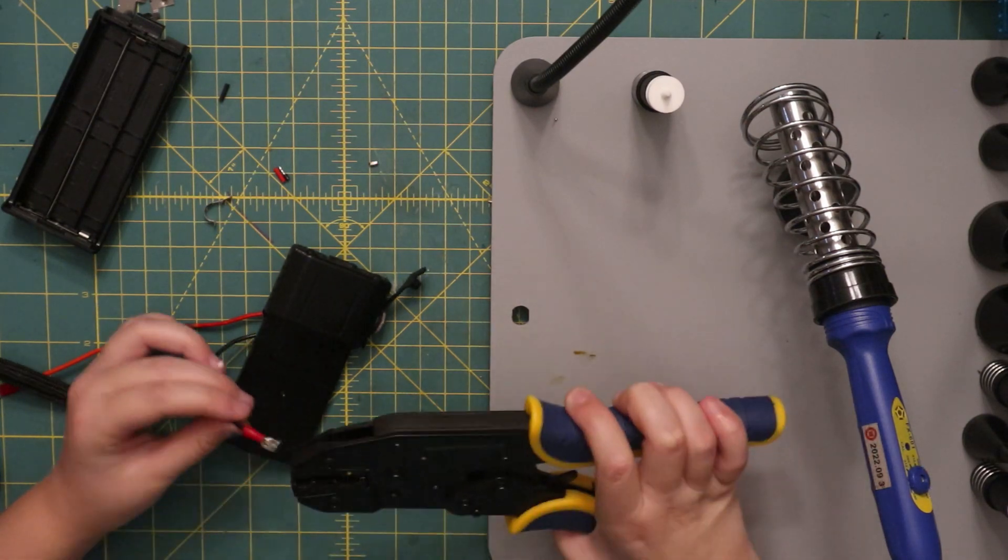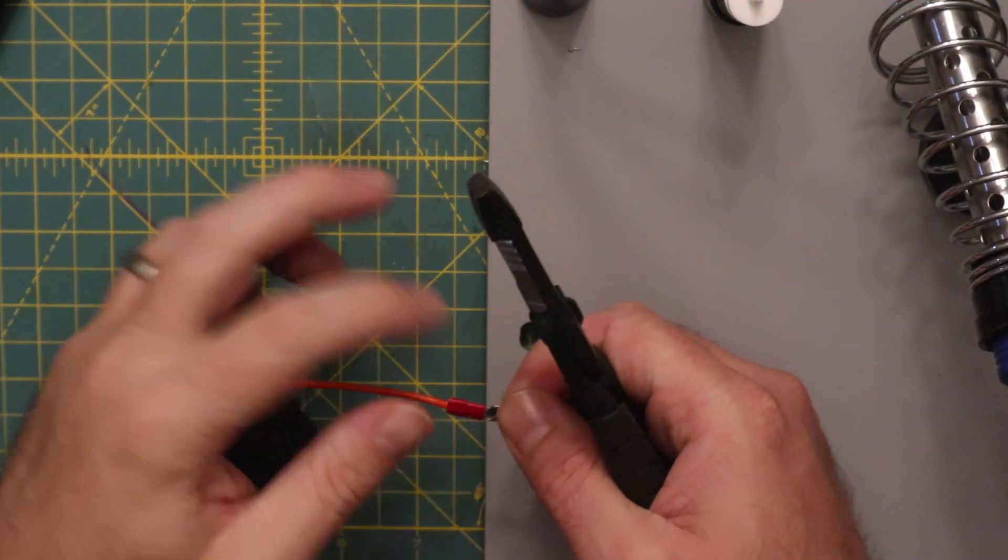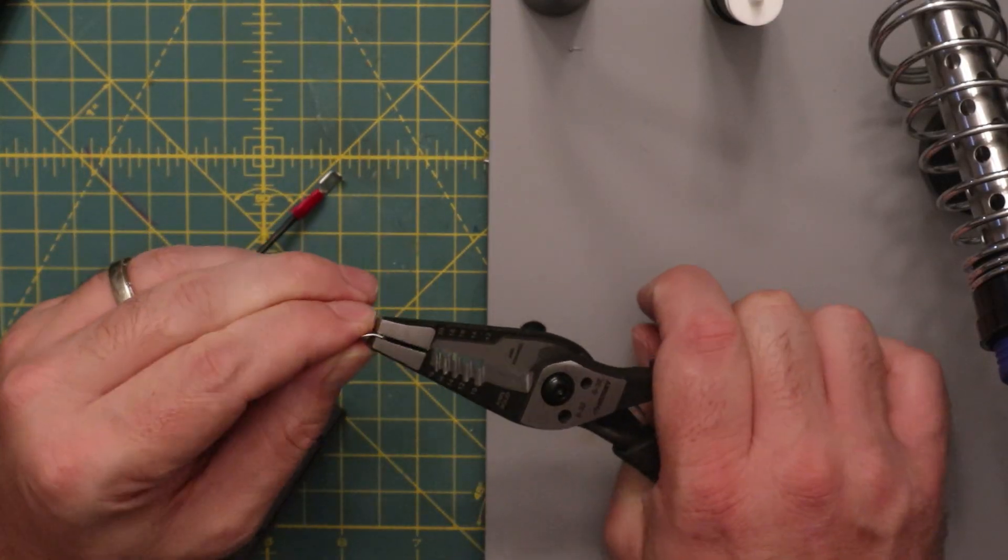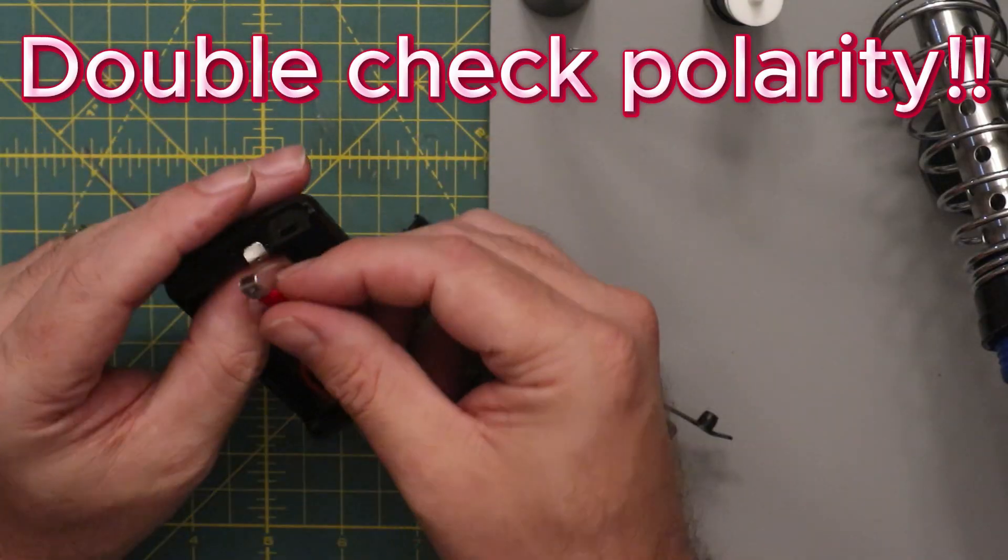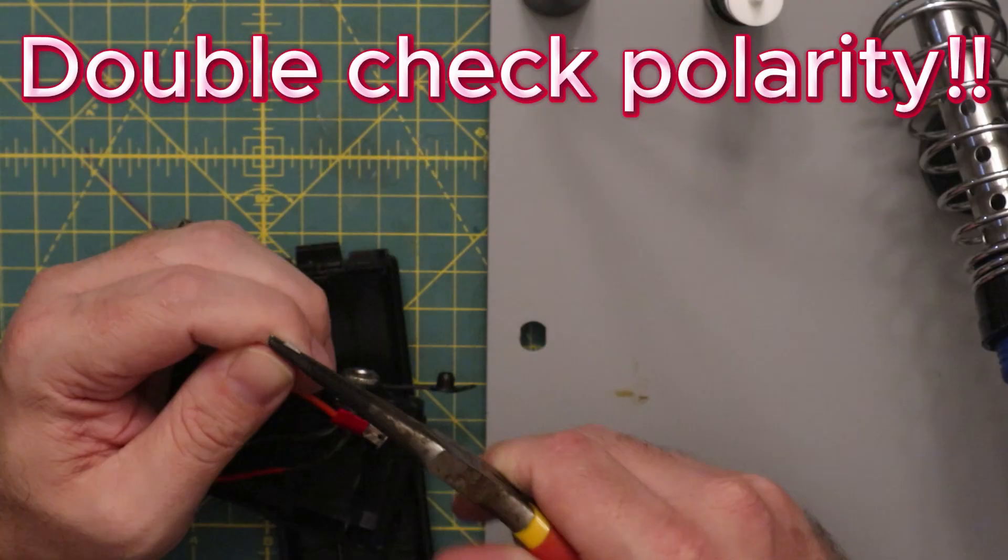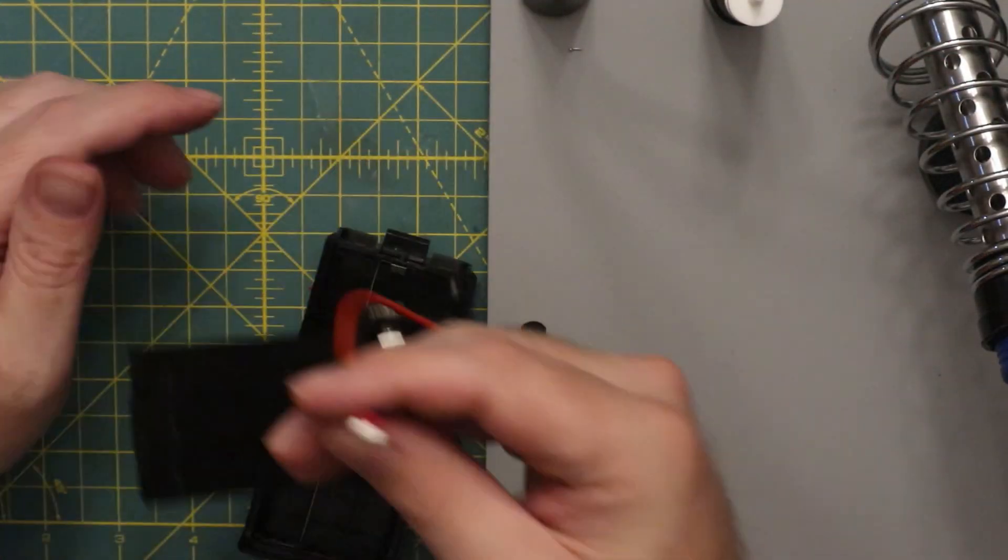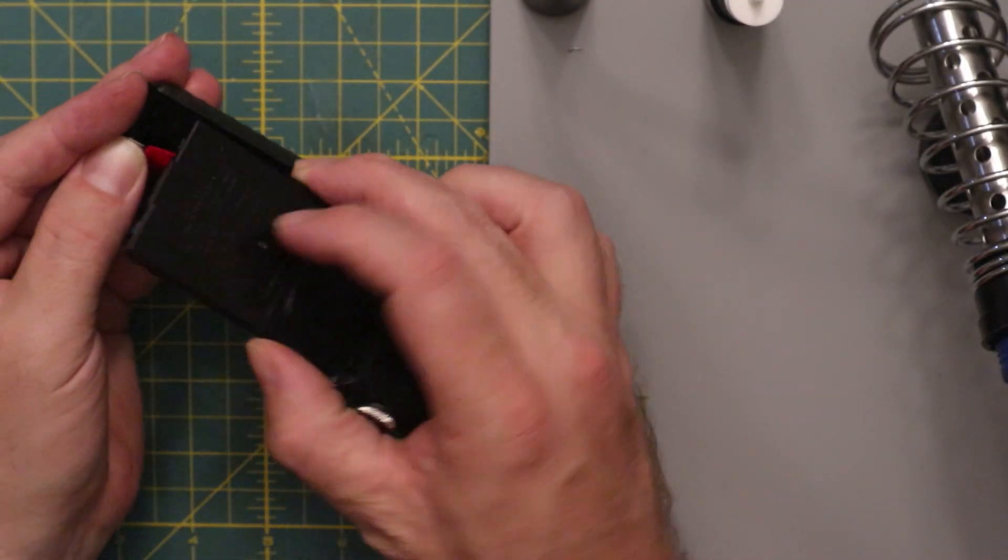We'll do that for the positive and then the negative lead here. Once we have those nice and solid we're going to go back in with the pliers and apply a 90 degree bend that's going to simulate the terminals that were originally on the battery pack. It did take a couple rounds of adjustments to get those just right so that they would fit in place and the angles would match neatly.